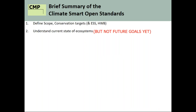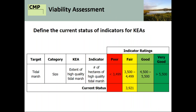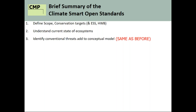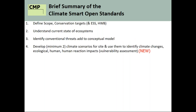Here's the beginning of a conceptual model showing all those targets, ecosystem services derived from them, and human well-being targets. The next step is to understand the current state of ecosystems but not future goals yet — essentially just viability analysis without looking at future desired state. Then step three is to identify the conventional threats and add those to conceptual models — really no different than standard practice. Then we come to step four, where we develop a minimum of two climate scenarios for the site.